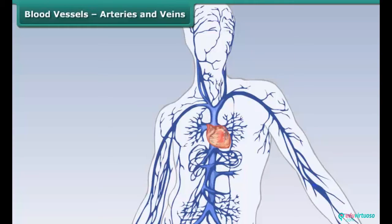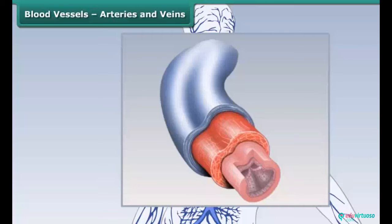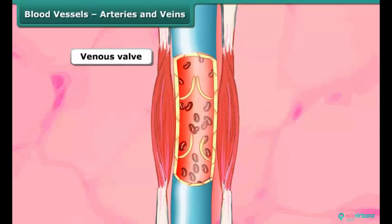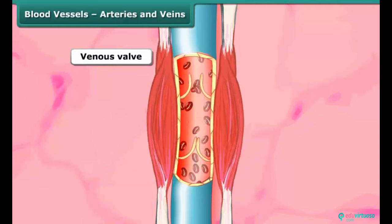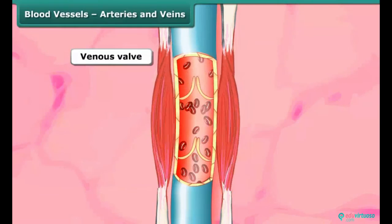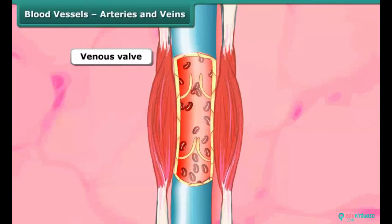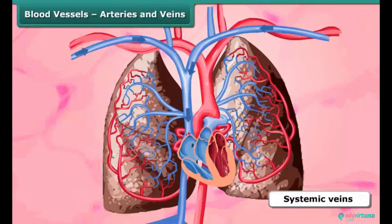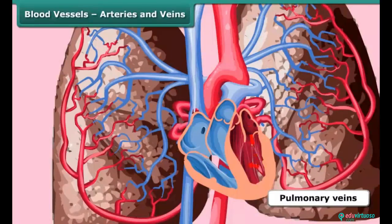Veins are blood vessels with thin walls. They are close to the skin and carry deoxygenated blood from different parts of the body to the heart. Most veins have flaps known as venous valves that ensure blood flows only towards the heart, preventing it from flowing back. The pressure of blood in veins is lower than in arteries. Veins are of two types: systemic veins, which carry deoxygenated blood from body parts to the heart, and pulmonary veins, which carry oxygenated blood from the lungs to the heart.